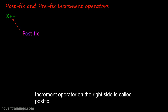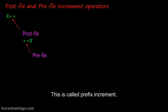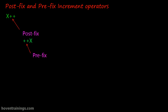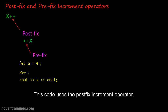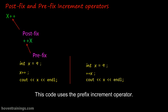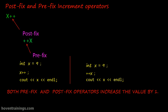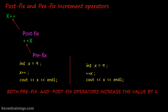An increment operator on the right side of its operand is called postfix. When it appears on the left of its operand, it is called prefix increment. Both this postfix code and this prefix increment code produce the same output — both display 10.